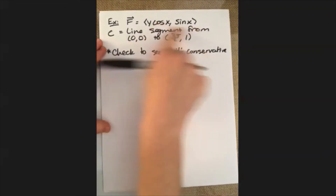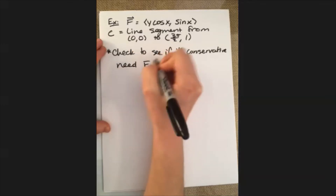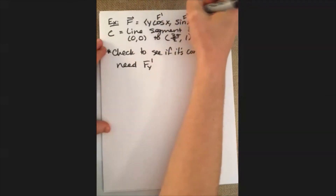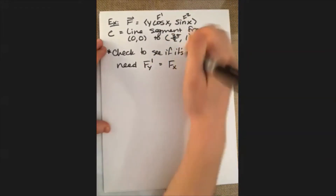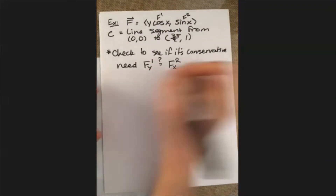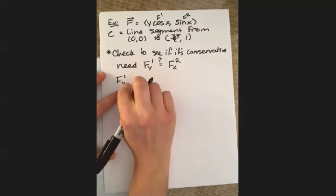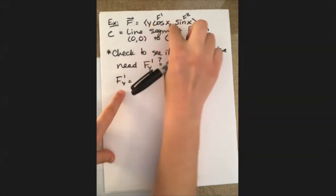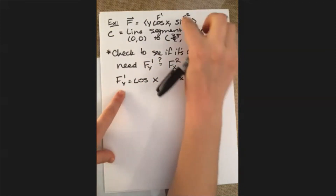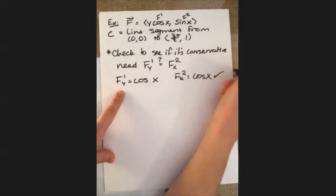Since we're working with a two-dimensional vector field, we need the partial derivative with respect to Y of our first component F1 to be equal to the partial derivative with respect to X of our second component F2. The partial derivative of F1 with respect to Y is cosine of X, and the partial derivative of F2 with respect to X is also cosine of X. Since these two match, we know that it is conservative.